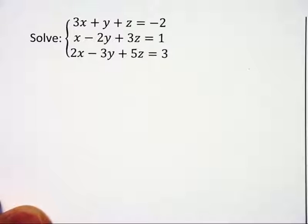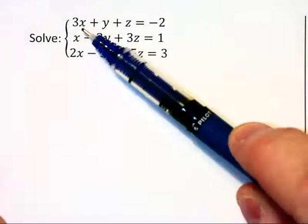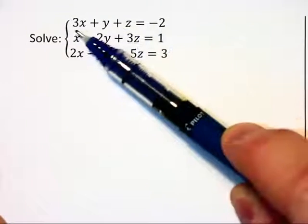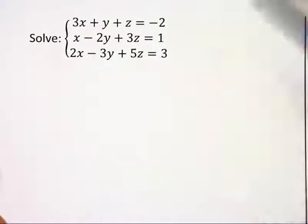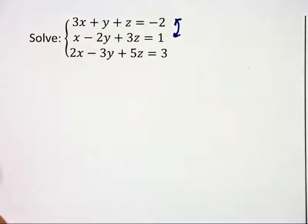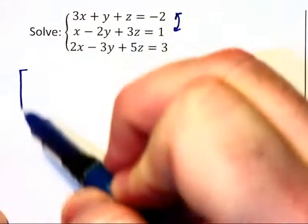Now let's solve a 3x3 system using an augmented matrix. We would like to have a 1 in this top left corner. And instead of multiplying through the first equation by 1/3, which will create fractions,